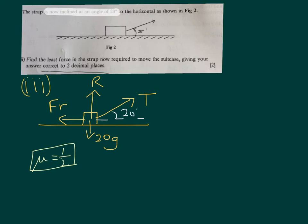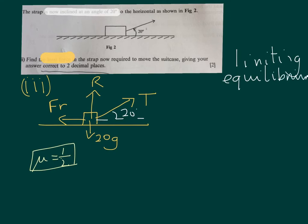We're asked in the question to find the least force in the strap now required to move the suitcase. So at the moment it's just sitting there, and we want to find what force needs to be applied in order for the suitcase to begin to move to the right. So really what we have here is what we call limiting equilibrium. We're going to have our forces balanced but we can also apply F equals mu R. So it's not moving, but the friction is still at its maximum. So the friction will be equal to mu, and we know that mu is still a half, so the friction will be equal to a half of R.